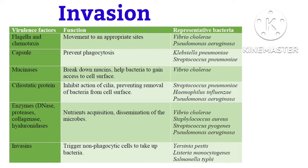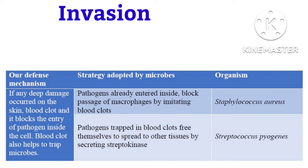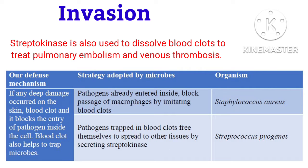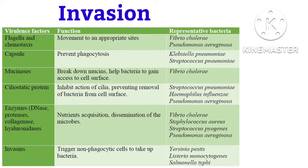Proteins produced by bacteria called invasins induce phagocytosis in cells that are not normally phagocytic. Some bacteria synthesize diverse groups of enzymes that break down the cementing materials holding cells together. Flagellated bacteria can move from place to place by chemotaxis. Just after a cut on the skin, blood clotting blocks most microbial entry, but some microbes produce streptokinase to free themselves and enter the bloodstream — streptokinase also has medical importance. Finally, ciliostatic proteins inhibit the movement of cilia on cells of the nasopharynx, reducing the chance of clearance from the respiratory canal.